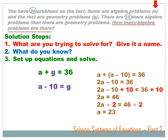Here's another question — if there are 23 algebra questions, how many geometry questions are there? The answer is 13, because I know that the number of algebra questions plus the number of geometry questions equals 36, and I know that 23 of the questions are algebra questions, so 23 plus G equals 36, and G would equal 13.